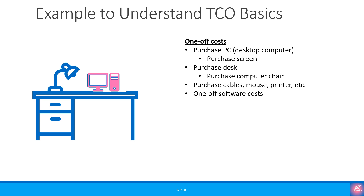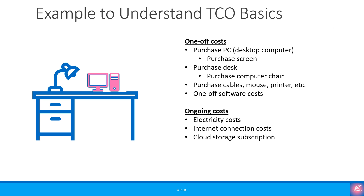All of the above are one-off costs, but we also have many ongoing costs. Electricity costs, internet connection costs regardless of whatever type of internet connection you have. If you use cloud storage like OneDrive or Dropbox as backup storage, there are ongoing costs associated with that. Then there are ongoing software costs that you may have on subscription, for example Office 365, so we pay monthly fees for Microsoft Office, Outlook etc. Then finally, things can always go wrong so we would have occasional hardware or software repair costs.